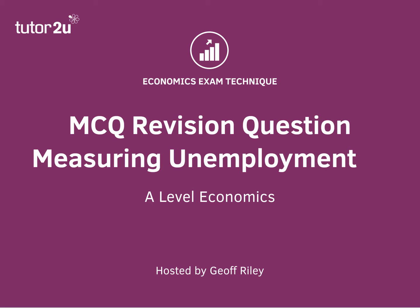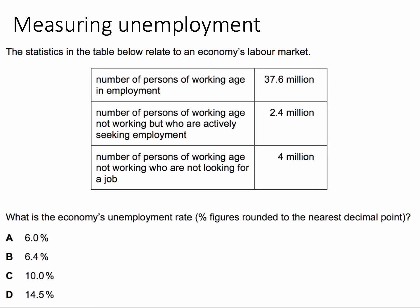This question is about how we measure the rate of unemployment. The data in the table relates to a country's labour market. We're told the number of people of working age who have a job, the number of people of working age who are not working but looking for work — actively seeking a job — and the number of people of working age who are not working and not looking for a job. The question is: what is the economy's unemployment rate as a percentage? Press the pause button and when you're ready, I'll be back in a few seconds with the answer.